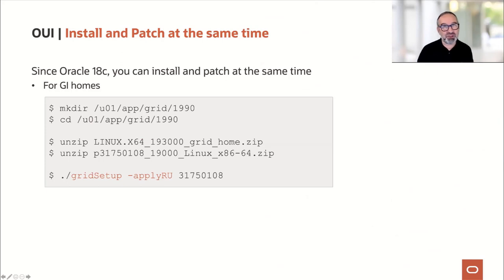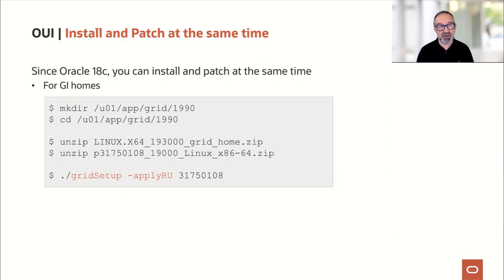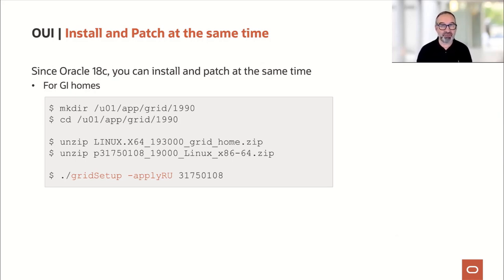So, installation and patching at the same time. When you download a release, it's typically always the base release. In 19c, that's 19.3.0. But what if you could install at the same time also the most recent release update? This is something you can do since Oracle Database 18c — you can install and patch at the same time. The installer has a feature for that.